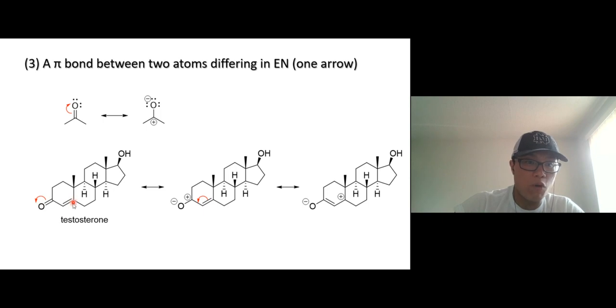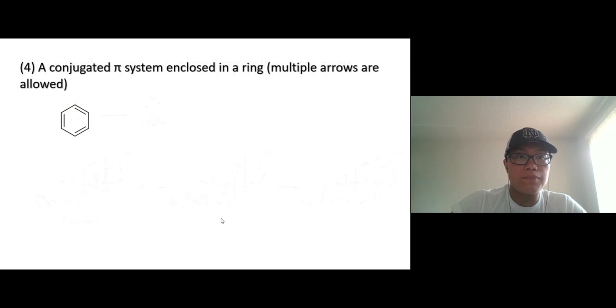All right, the last pattern. In a conjugated pi system enclosed in a ring like in benzene, you are allowed to use multiple arrows like that. These are the same thing there.